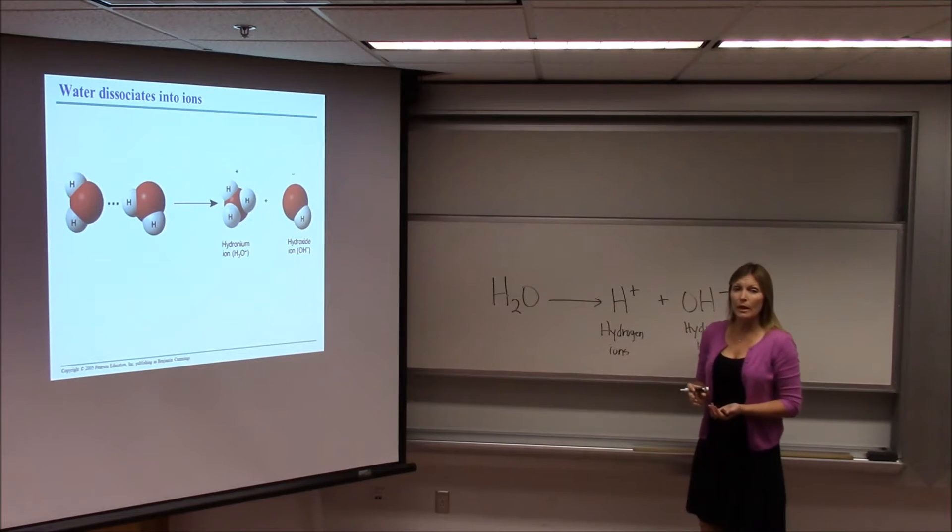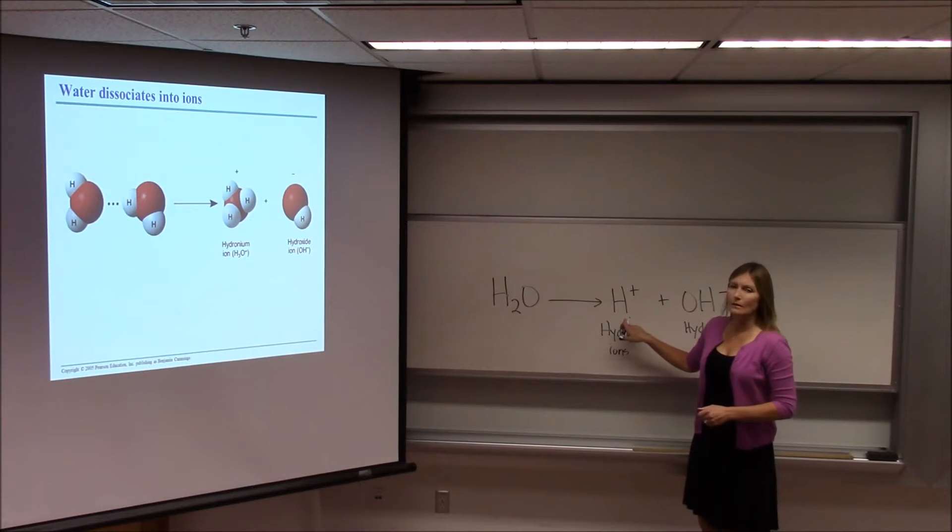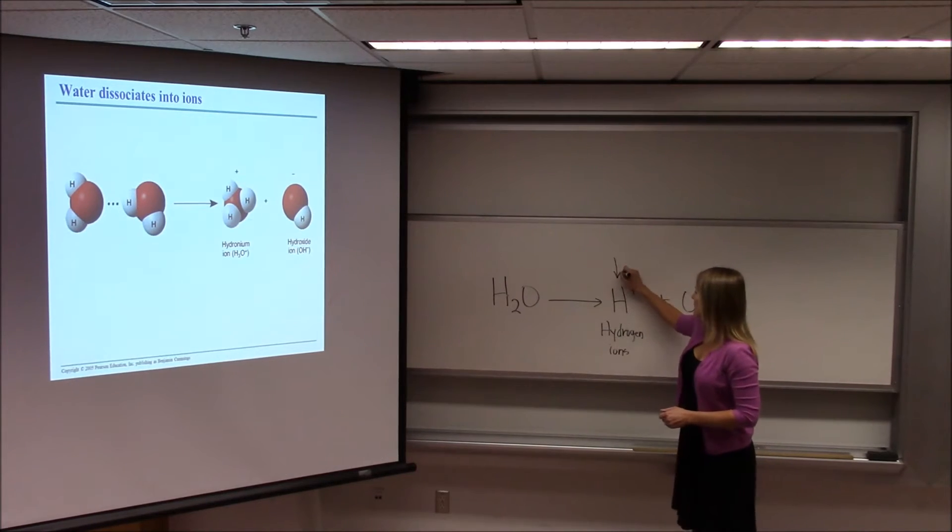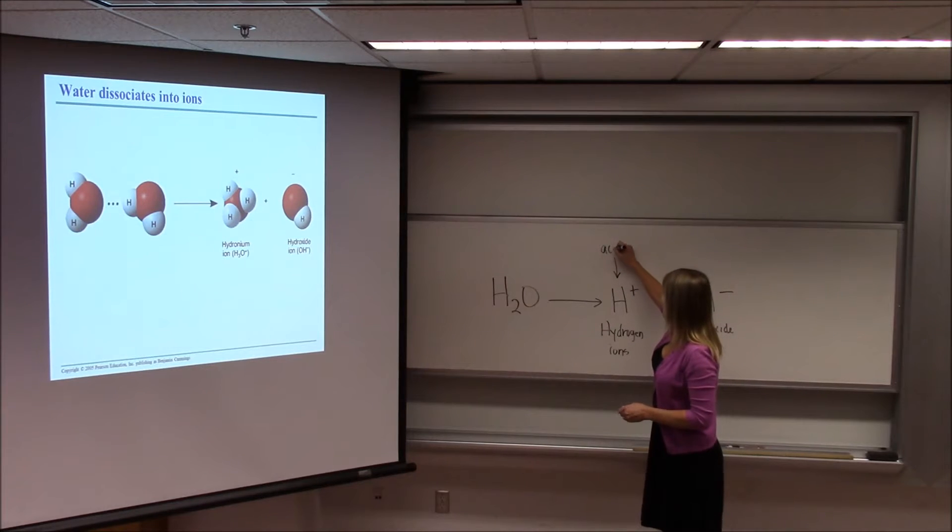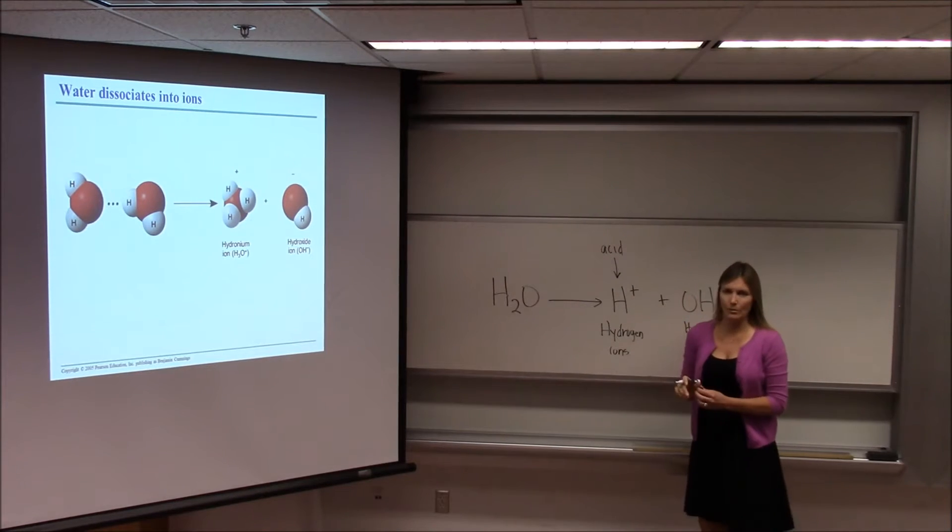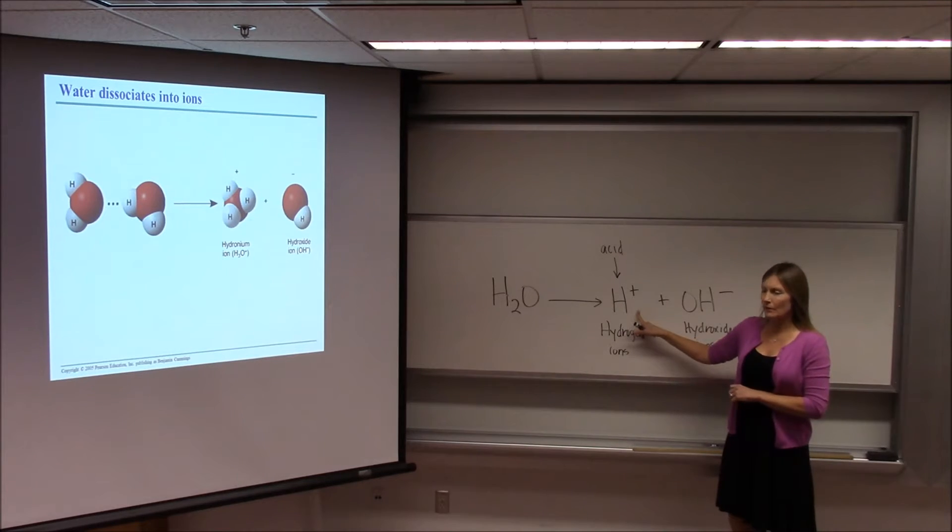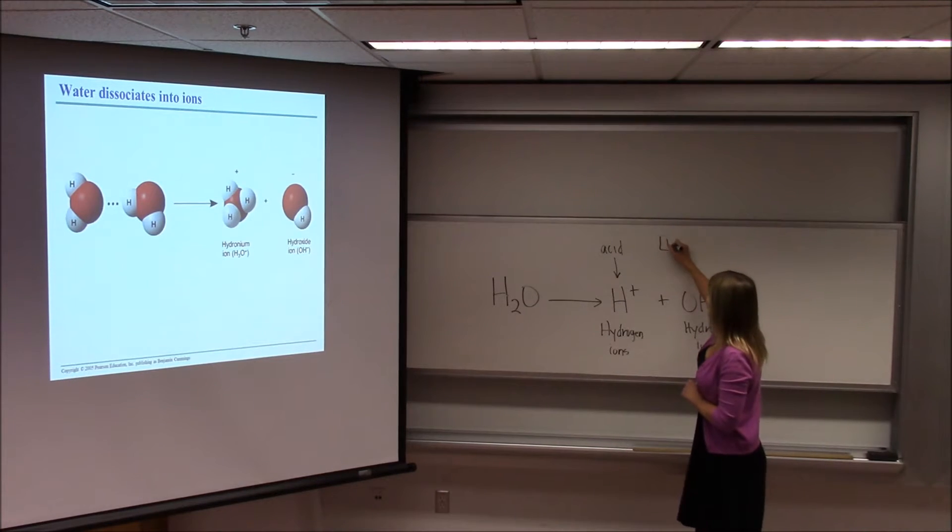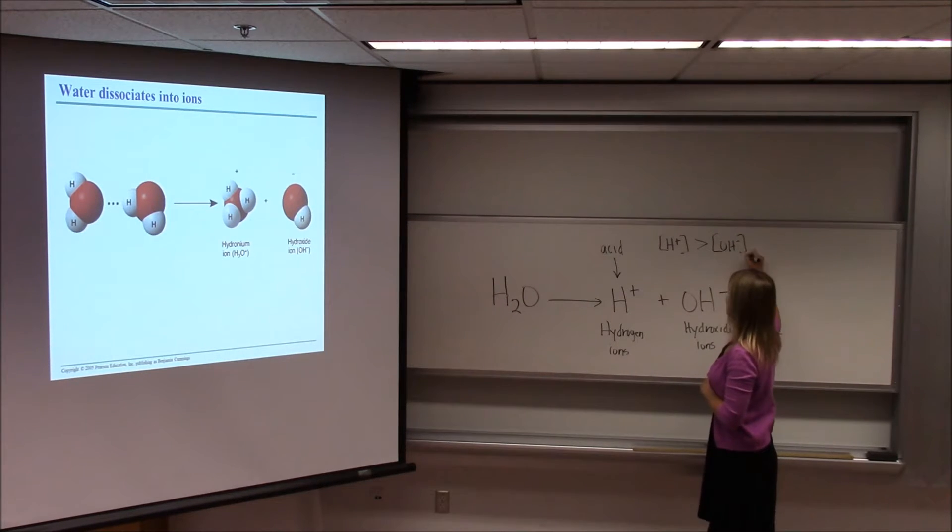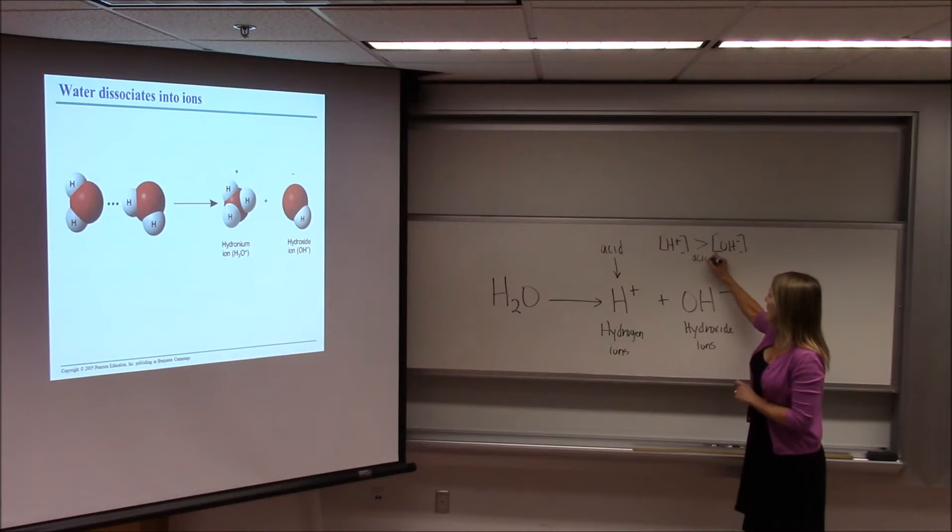And do you recall which ions make a solution more acidic? So this is what's going to make a solution an acid, when more of the H+ ions are free in the solution. So when the concentration of the hydrogen ions is greater than the concentration of the hydroxide ions in the solution, that's what we call an acid.